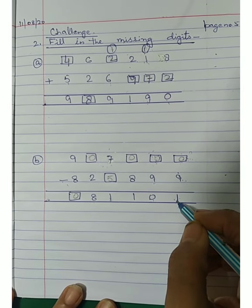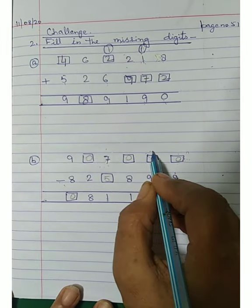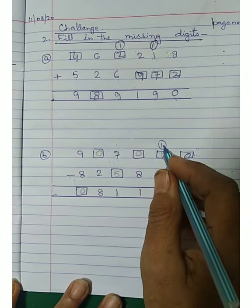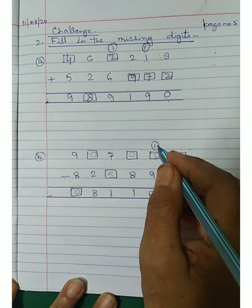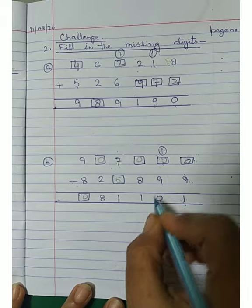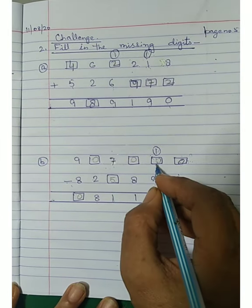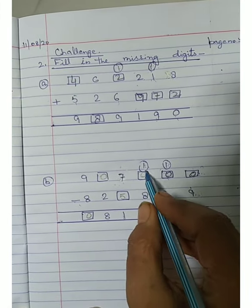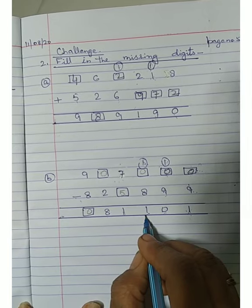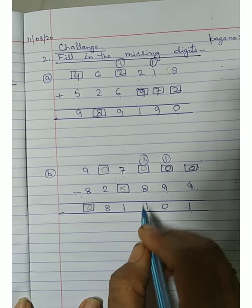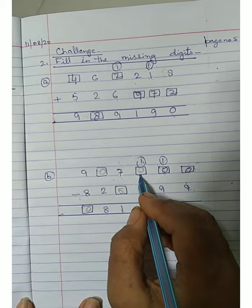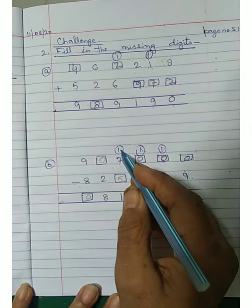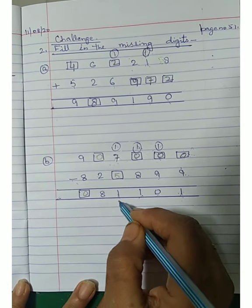तो 9 और 1 = 10, 10 की तो 0 आया और carry आया 1। अब हमें ऊपर वाला number देना है — 9 और carry 1, 9 plus 1 = 10, 10 की 0 आ रहा है और carry फिर लगा 1। Next, 1 और नीचे answer का 1 plus करना है — 2 आया। ऊपर का number missing है तो 8 plus 2 = 10, 10 की 0 और carry लग गया 1।